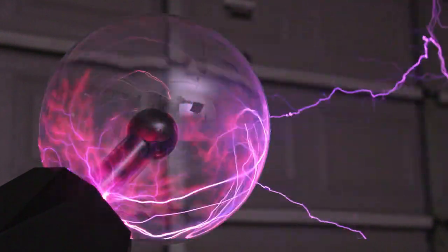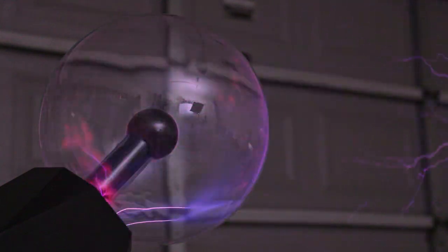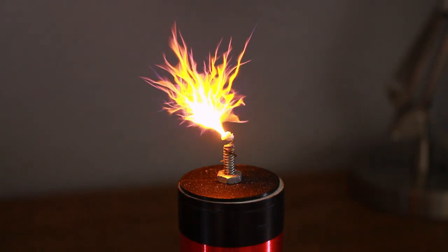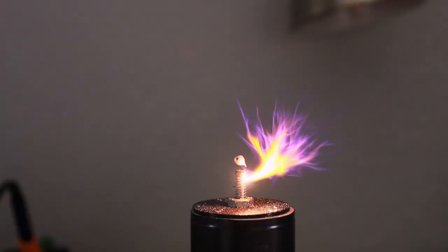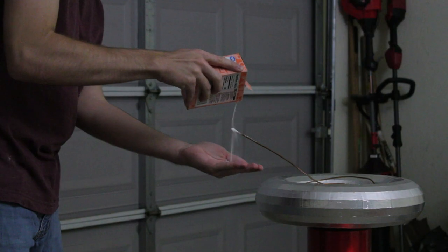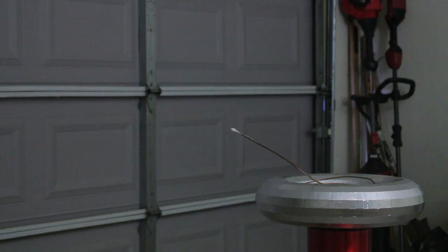So, if we can get colored sparks inside a glass bulb, what's stopping us from getting colored sparks into the open air? I mean, I've done it before with my smaller solid state coils by doping the electrode with chemicals. So, shouldn't it work the same with the larger coil? Well, not exactly.